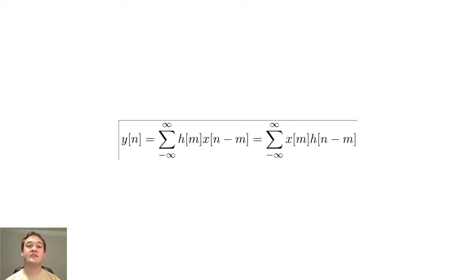The convolution sum tells us that we can create y of n by adding shifted versions of the input multiplied by the unit pulse response. I will discuss the unit pulse response in greater depth later, but I want to help you understand why the convolution sum is a property of LSI systems first.